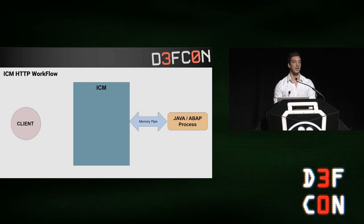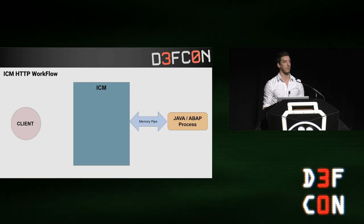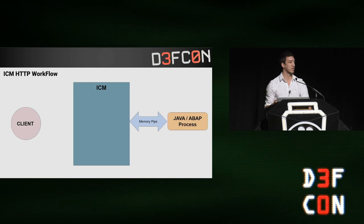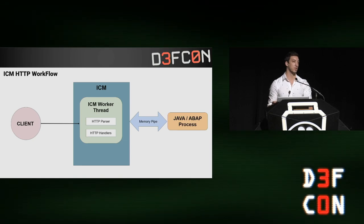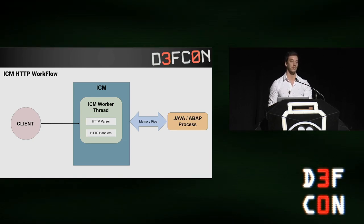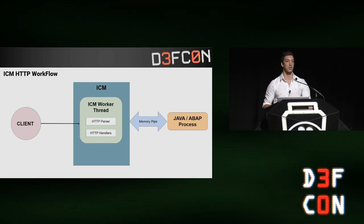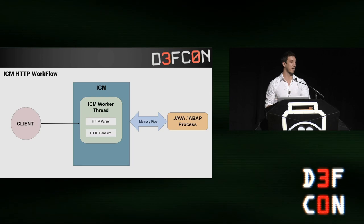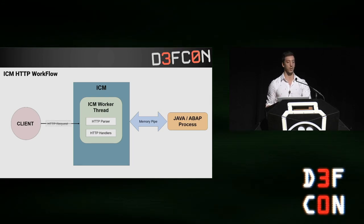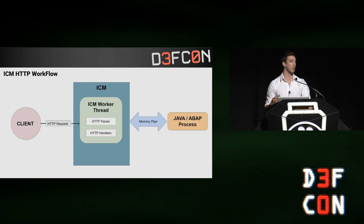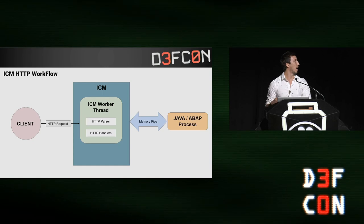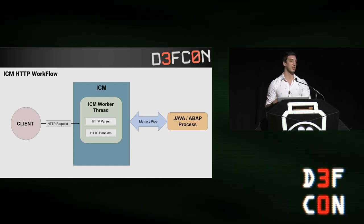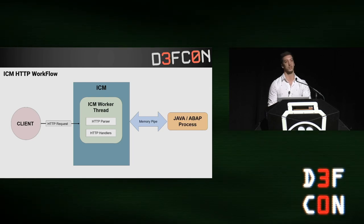The ICM is the HTTP server that receives connections from clients. When a client starts a TCP connection, a worker thread — an internal thread of the process — is assigned to that TCP connection. This worker thread handles all requests and responses for that specific client. When a client sends a request, it's received by the worker thread, which uses the HTTP parser to understand the request, then uses some internal HTTP handlers to try to resolve the request internally.